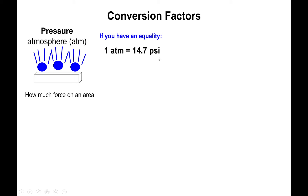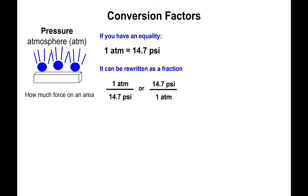Since that equality represents the same thing just in different units, we can write it as a fraction. We could have the one atmosphere on top and the 14.7 PSI on the bottom, or the 14.7 PSI on top and the one atmosphere on the bottom.